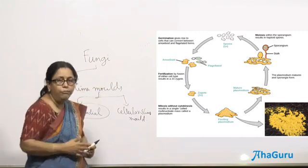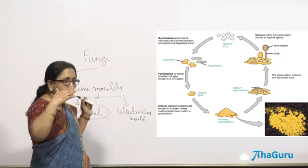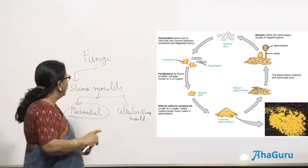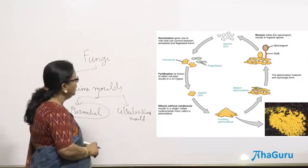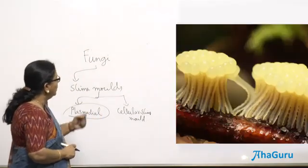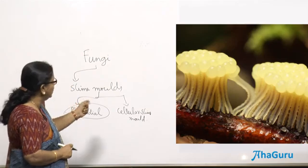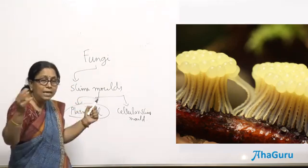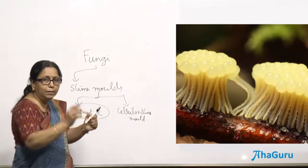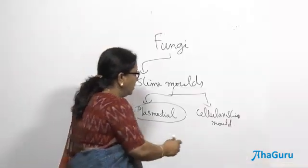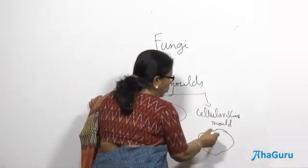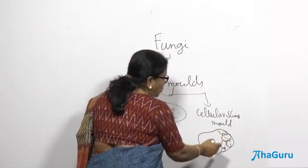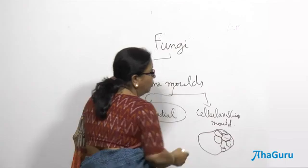That is the life cycle of the acellular or plasmodial slime mold. The cellular slime mold, as the name indicates, has cells — many amoebae aggregate together and form something called a pseudo-plasmodium. That is what a cellular slime mold is.